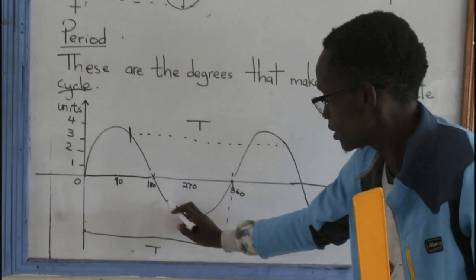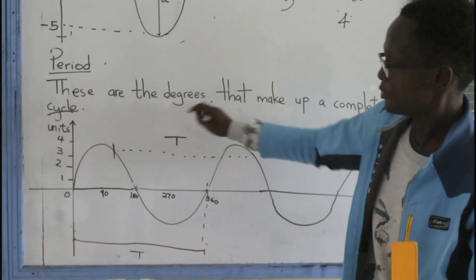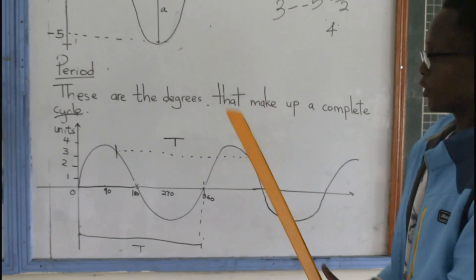So, my period is 360 degrees according to my scale here. When they ask you the period, you have to give it in terms of degrees. As per our definition here, these are the degrees that make up a complete cycle.